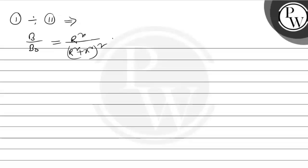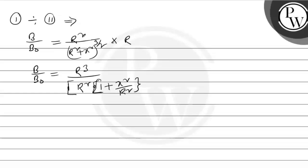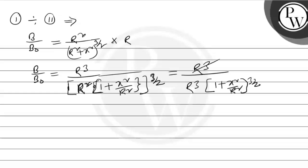Multiply by R³. So B/B₀ is equal to R³ / (R² + x²)^(3/2). Taking R² common inside the bracket, it becomes 1 plus x²/R², whole to the power 3/2. The R³ terms cancel, so B/B₀ equals 1 / (1 + x²/R²)^(3/2).